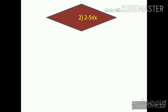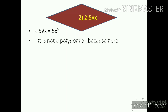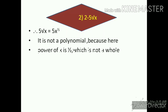Question 2: 2 - 5√x. The variable is under a root, so the degree is 1/2. Therefore 5√x equals 5x^(1/2). It is not a polynomial because the power of x is 1/2, which is not a whole number.